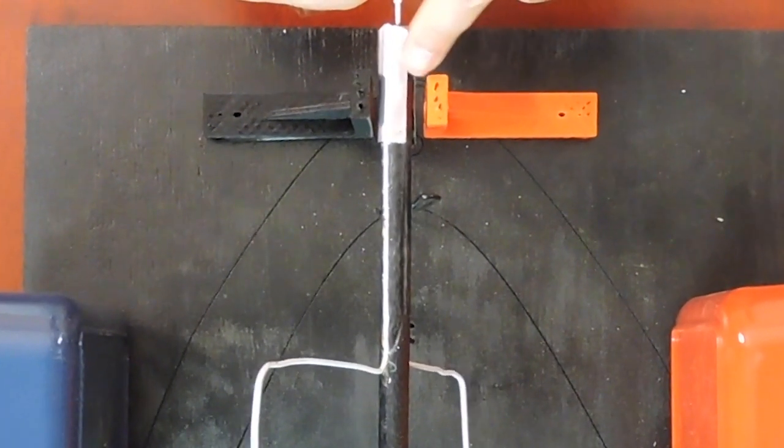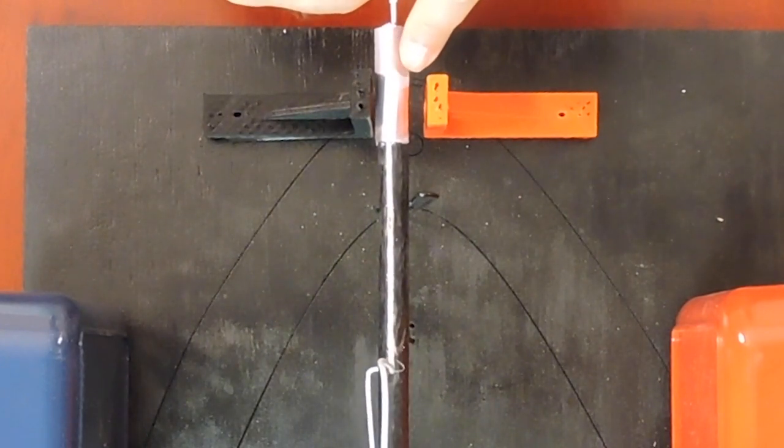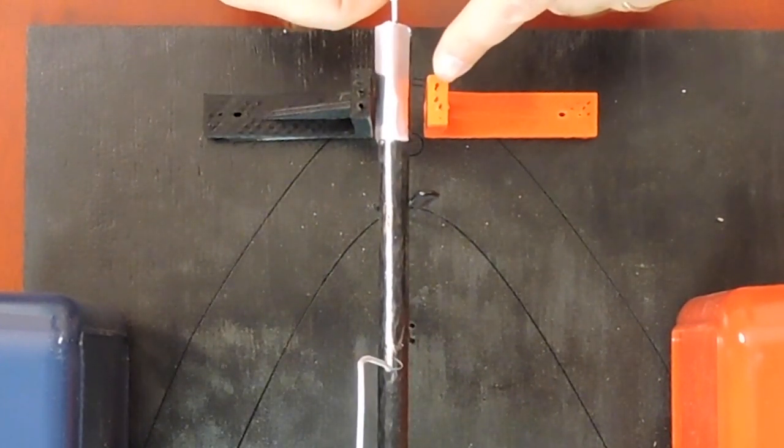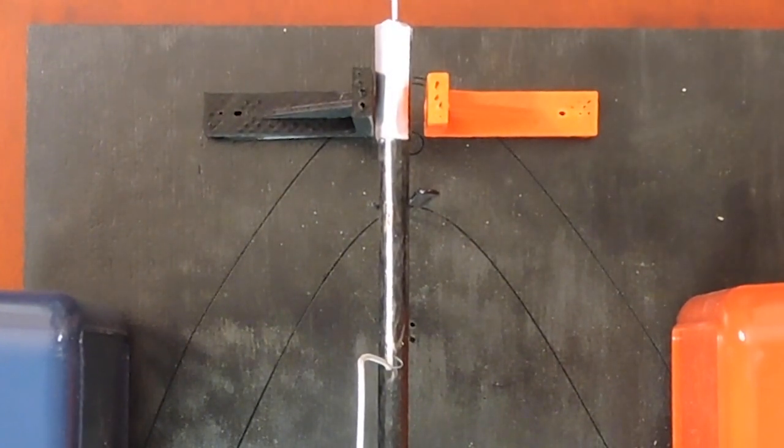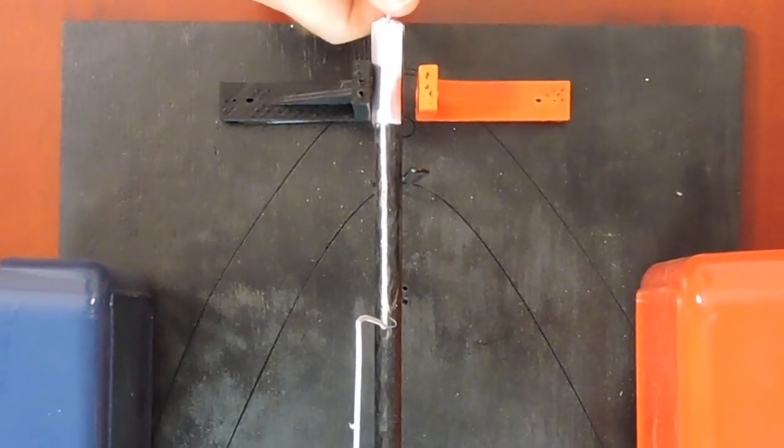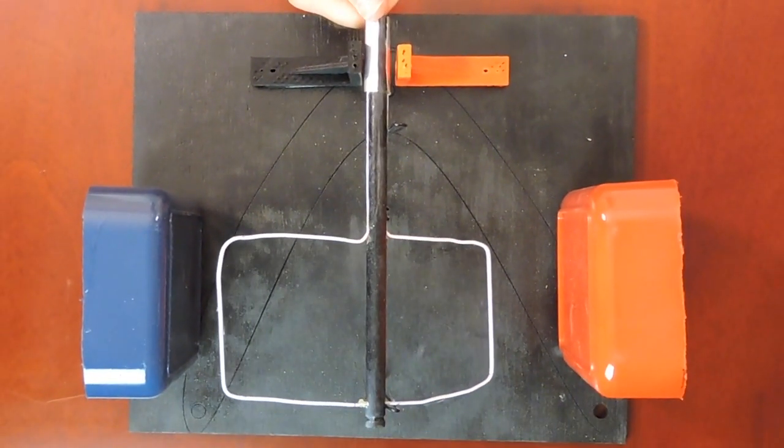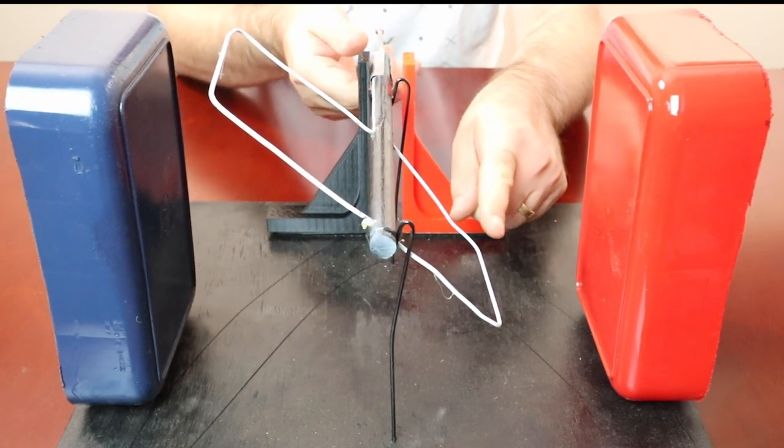Over here when we get to this position, then what's going to happen is that there's going to be a disconnection of current because I have the split now connecting to the brushes. And so therefore there's no current going in the loop whatsoever. Now why is that important? Well, let's ignore the fact that we have a split ring commutator for the moment.